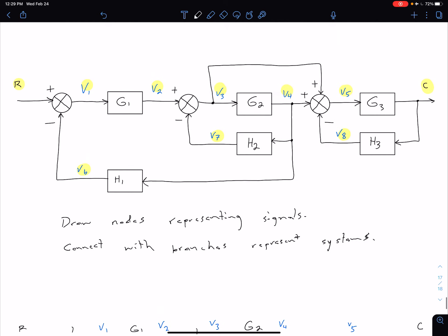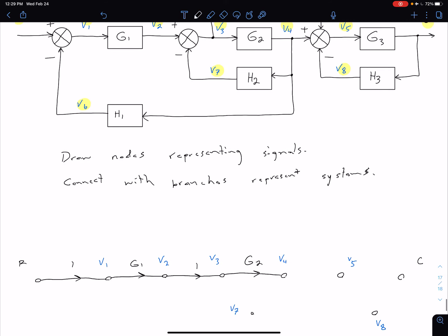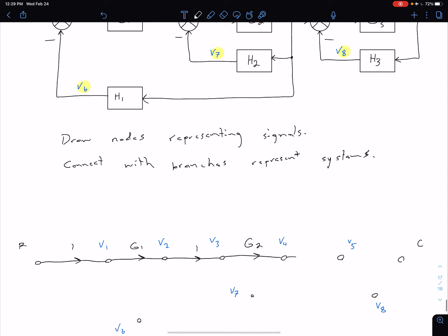Going from four to five, again, four is just coming through this summing junction being added. So we're just going to have V4 coming into V5, so that's going to be a gain of one.